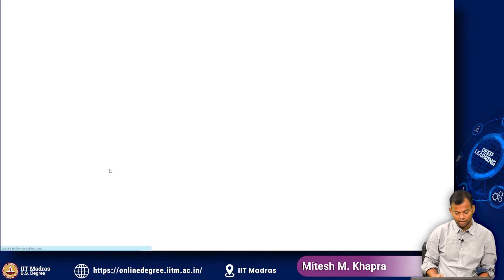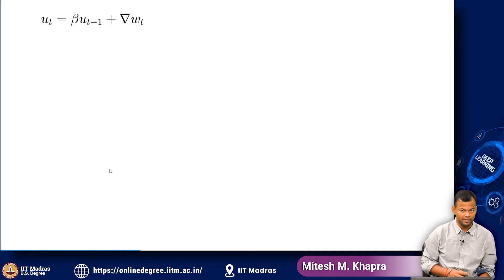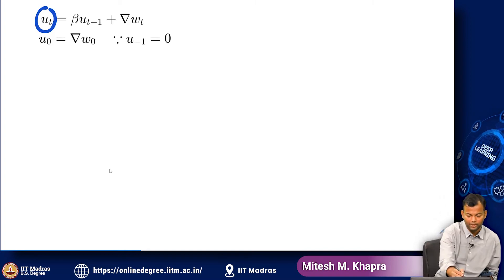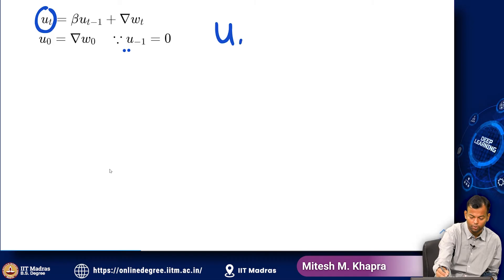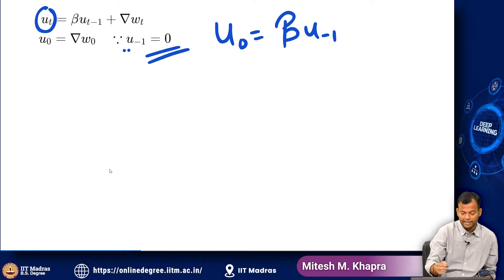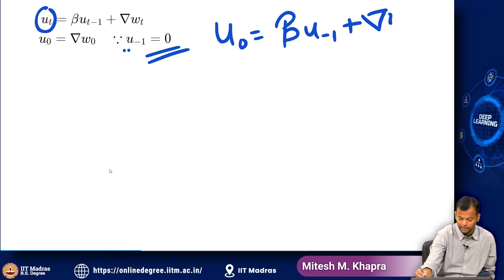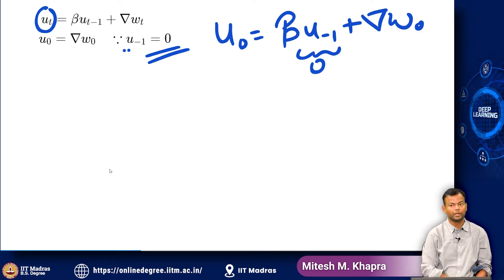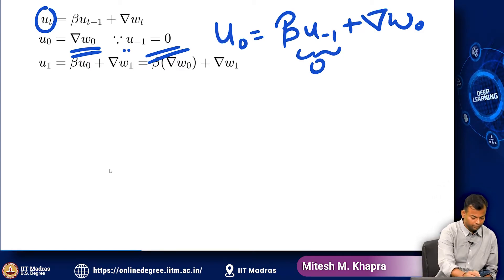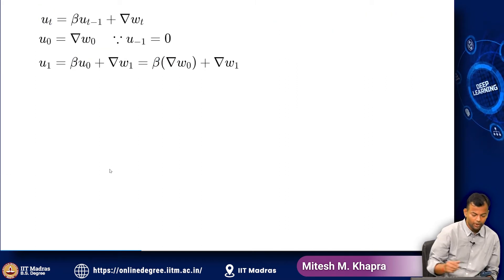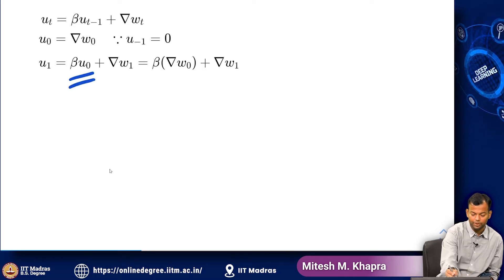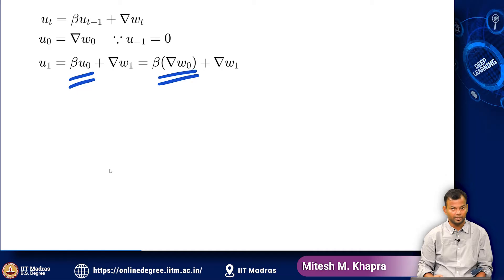So u_t is the history vector. At time step 0, since u_{-1} is not defined, we set it to 0. So u_0 equals the derivative of the loss function with respect to the parameter at time step 0. Now u_1 will be beta times u_0 plus the current derivative. If we substitute the value of u_0, it becomes beta times the previous derivative plus delta_w_1. So this is what I mean by history — you are not only considering the current derivative but also giving some importance to the past.